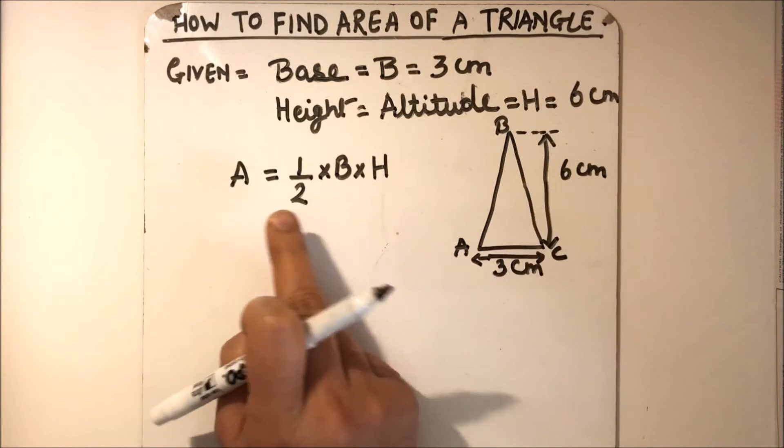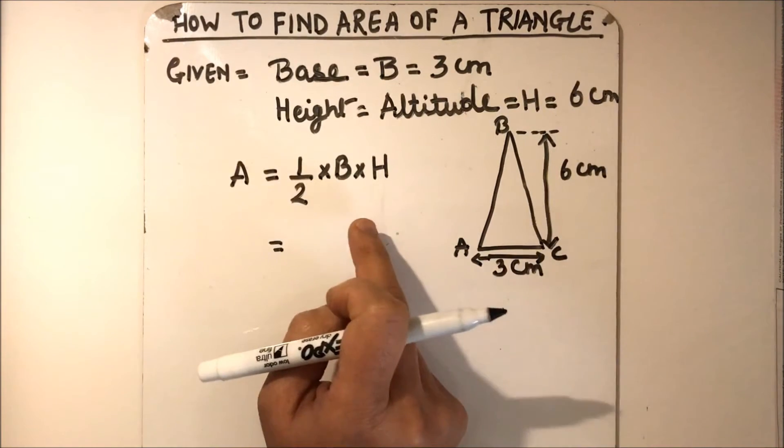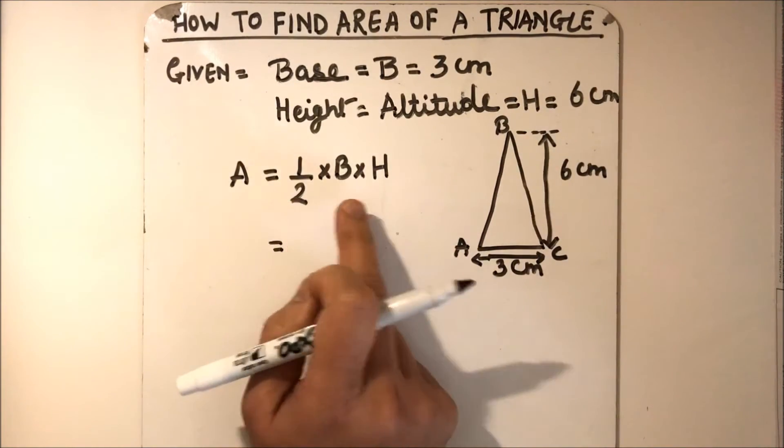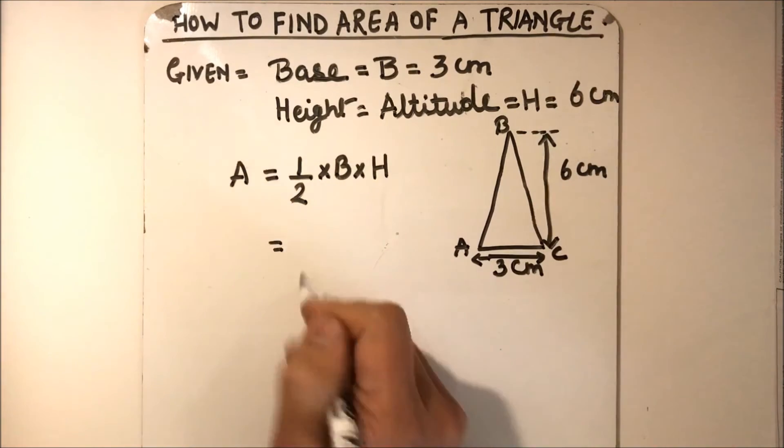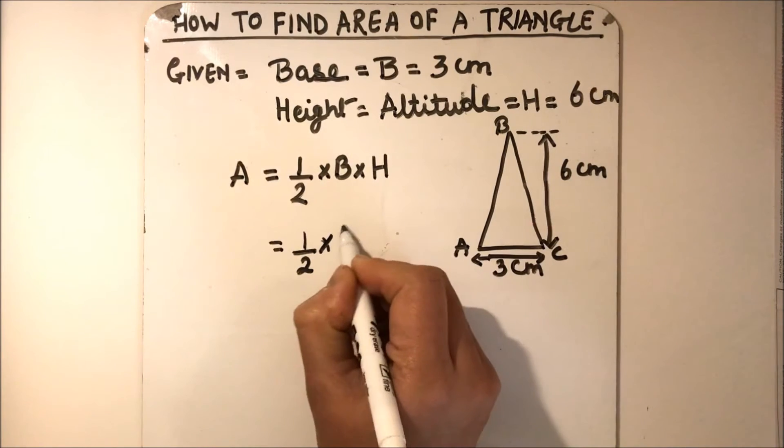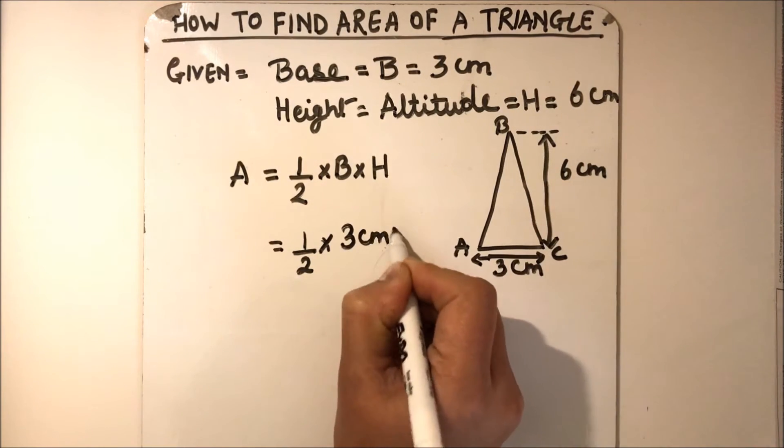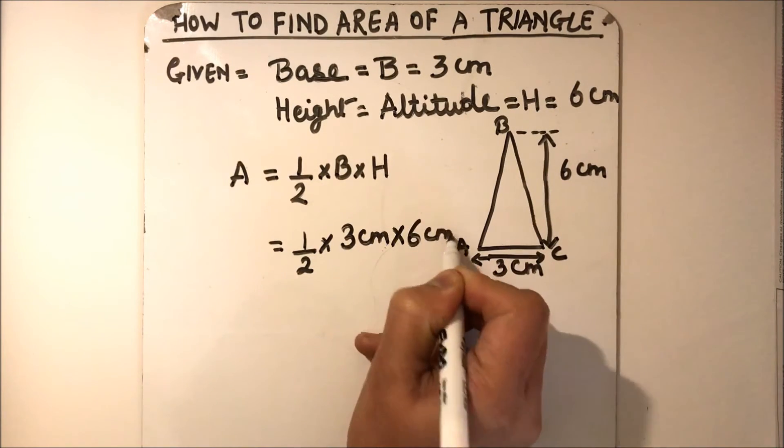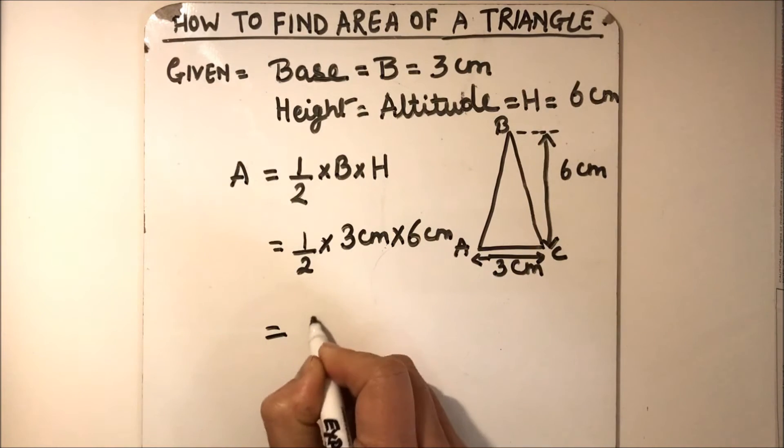We have a formula to find the area of a triangle which is half times base into height. So half times base is 3 centimeters and height is 6 centimeters.